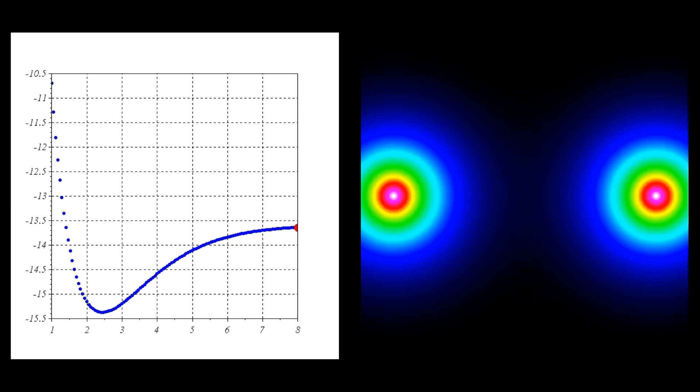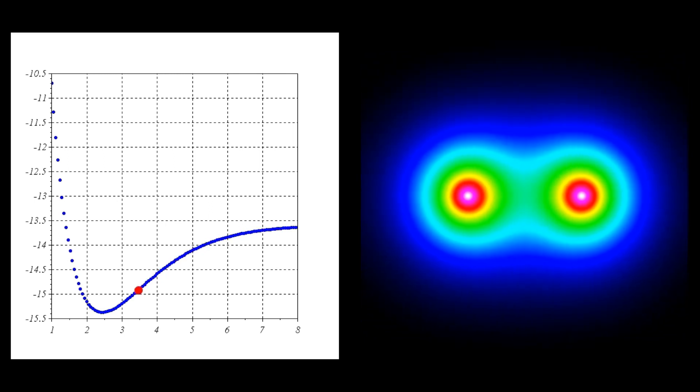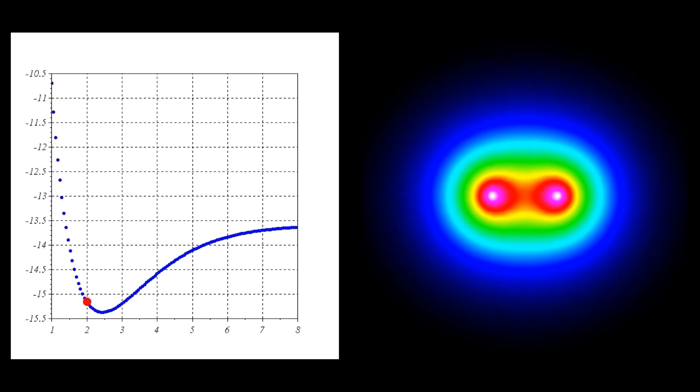Here at right, we see the protons separated by 8 Bohr radii, each surrounded by a 1s wave function. At left, we plot the corresponding energy. The total energy is minus 13.6 electron volts, the energy of a normal hydrogen atom and a free proton. As we move the protons closer, the energy decreases until we reach a minimum. After that, the proton-proton repulsion begins to dominate and the potential energy rapidly increases. At the minimum of the energy curve, the separation is about 2.5 Bohr radii and the energy is about minus 15.4 electron volts. The experimental values are 2 Bohr radii and minus 16.4 electron volts. So with this very simple model, we're able to predict the size and energy of the hydrogen molecule ion to within roughly 25% or so.